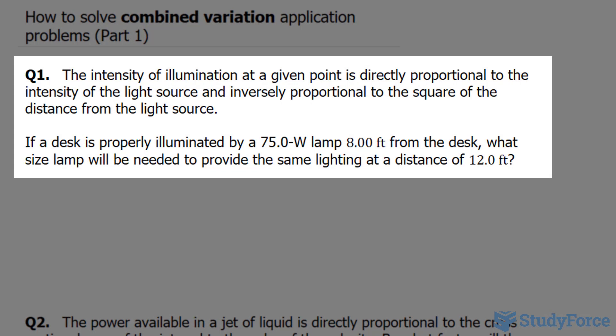The question reads: the intensity of illumination at a given point is directly proportional to the intensity of light source and inversely proportional to the square of the distance from the light source. If a desk is properly illuminated by a 75 watt lamp 8 feet from the desk, what size lamp will be needed to provide the same lighting at a distance of 12 feet?